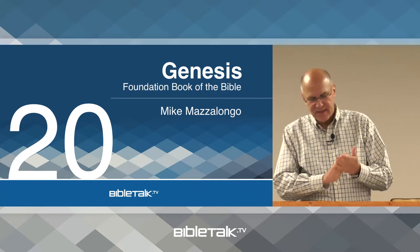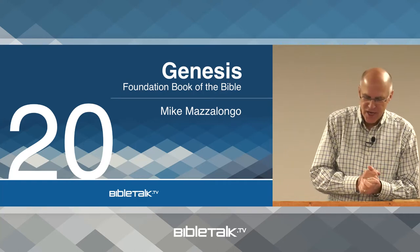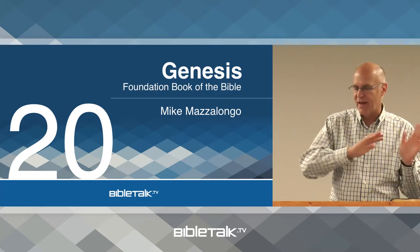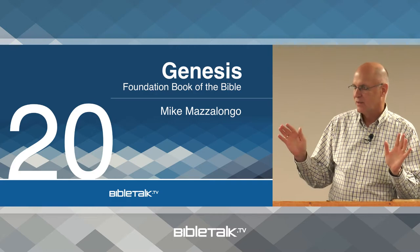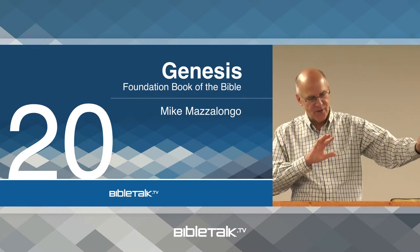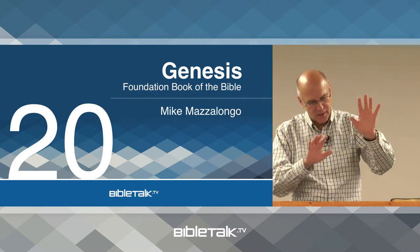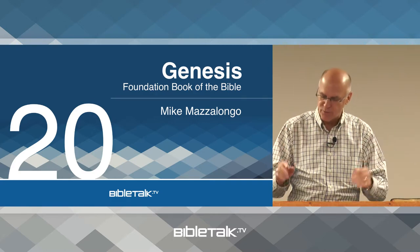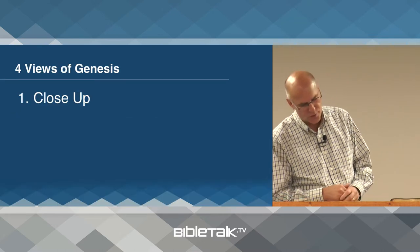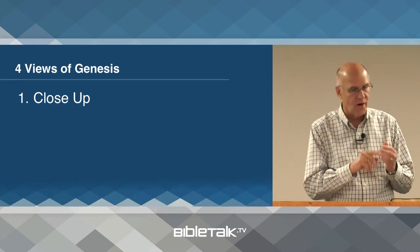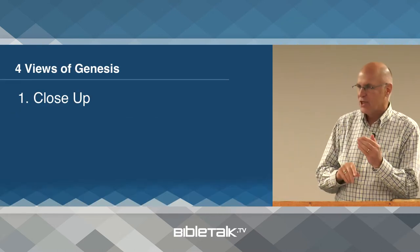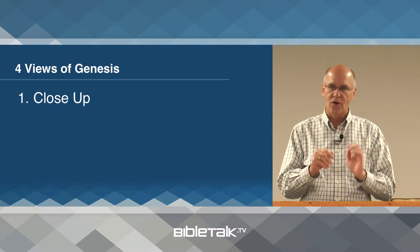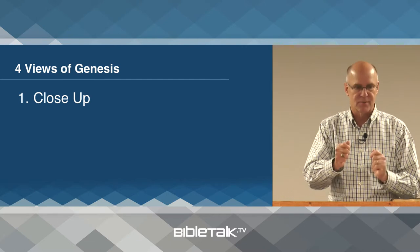Remember, the information in Genesis is given to us at different levels. It's like a movie that has different camera angles, different vantage points. I want to go over the four vantage points with you. If you understand this, then you'll understand the transitions.